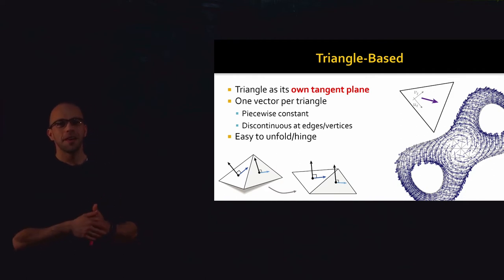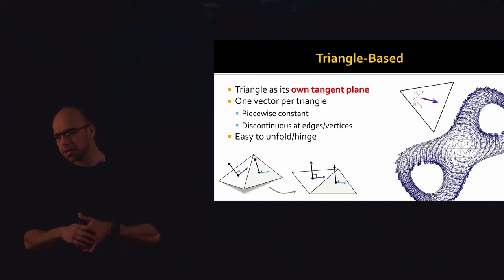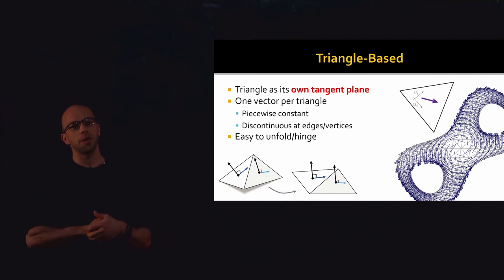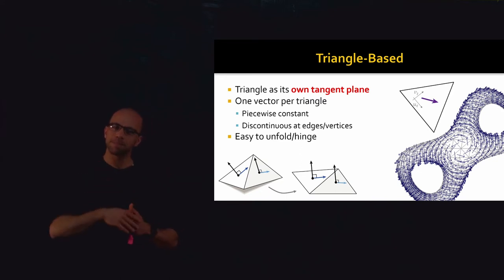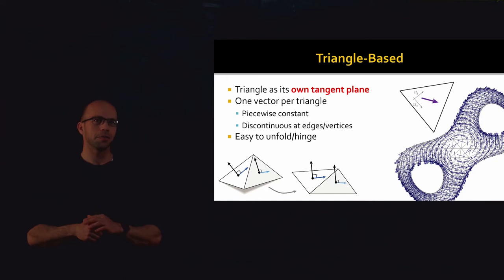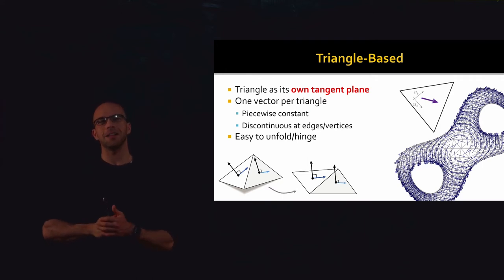The advantage of a triangle-based vector field is that it's easy to think about, but there are also disadvantages. When we talked about the Laplacian operator, we discretized it using first-order finite elements, and that allowed us to compute gradients of piecewise linear functions — one gradient per triangle. A triangle-based vector field can be thought of as piecewise constant. That means you really can't differentiate a triangle-based vector field easily using the same machinery from previous lectures, and it's discontinuous at the edges and vertices.